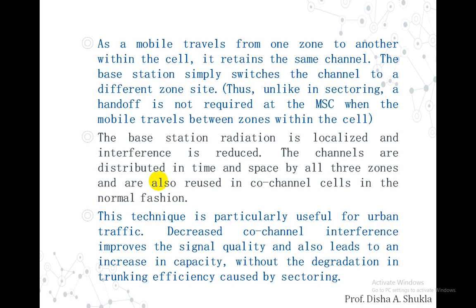The base station radiation is localized and interference is hence reduced. The channels are distributed in time and space by all three zones and are also reused in a co-channel cell in the normal fashion. This technique decreases co-channel interference, improves signal quality, and leads to an increase in capacity without degradation in trunking efficiency caused by sectoring — particularly useful for urban traffic where handoffs would otherwise increase significantly.